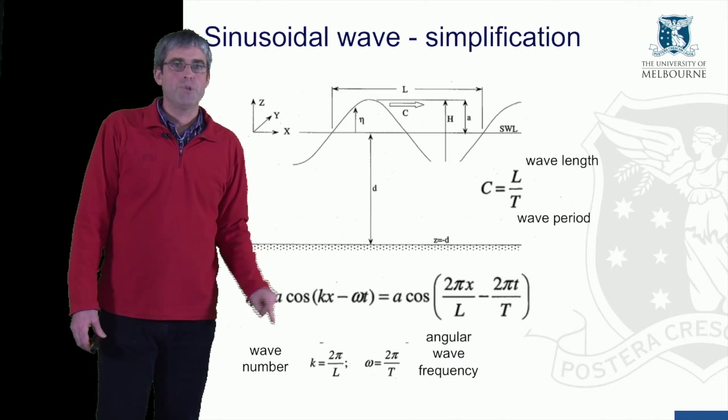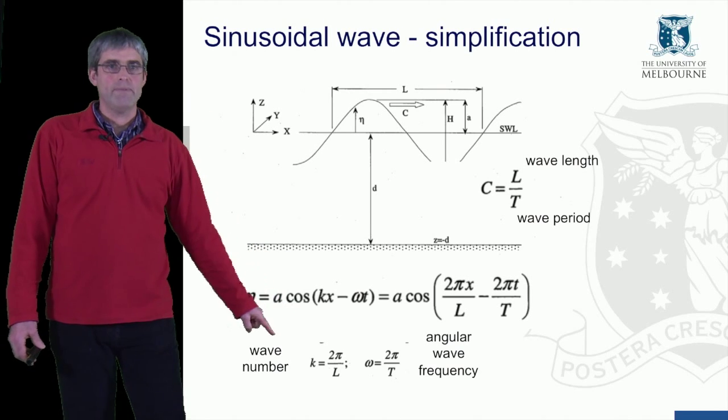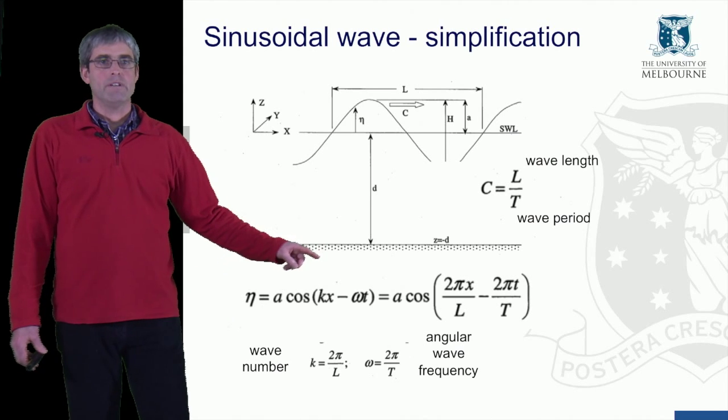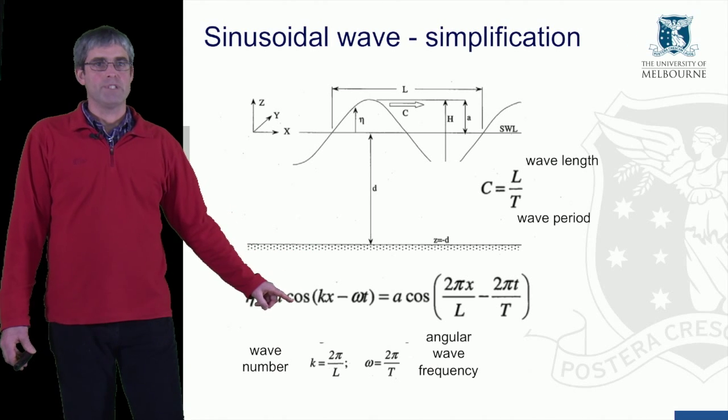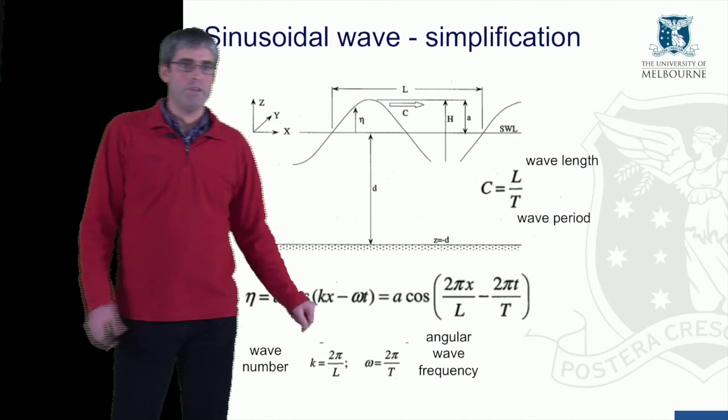k is referred to as the wave number, which is 2π on the wavelength, and ω is the angular wave frequency, which is 2π on the period of the wave.